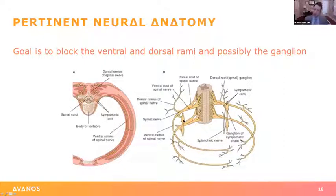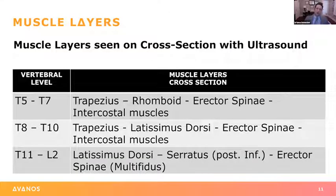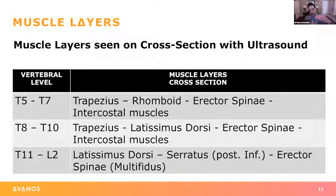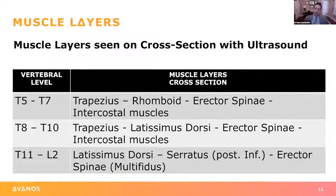There are also a couple of studies showing that some of the local anesthetic actually spreads into the ipsilateral epidural space. When discussing the erector spinae plane block, I like to discuss the sono anatomy. I compare it to another plane block that many of us know — the TAP block. With a TAP block, you look at three layers of muscles and go between the internal oblique and transverse abdominis. With the erector spinae plane block, you go underneath the erector spinae muscle, all the way down to the transverse process.